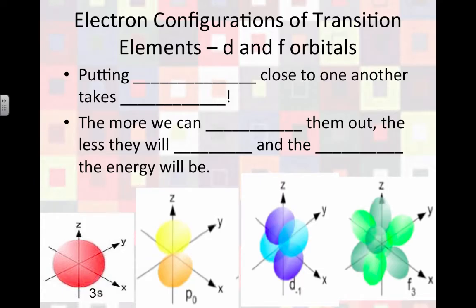So let's talk about some of our largest and most complicated elements. If we're putting electrons close together, then that's going to take some energy, because electrons are all negatively charged, and they're going to push away from one another. So the more we can spread them out, the less they will repel, and the lower their energy will be.